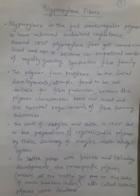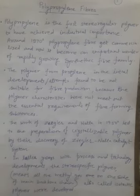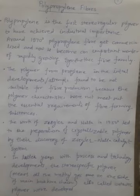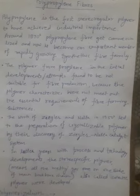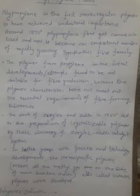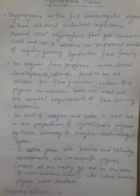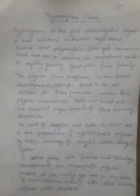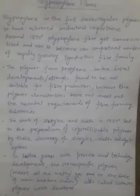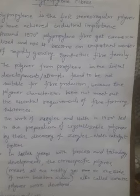Polypropylene is the first stereoregular polymer to have achieved industrial importance. Stereoregular means some side chains may result, and because of that, the close packing of molecules is not easily achieved. In the later years, even after the discovery of this polypropylene polymer around the 1970s, polypropylene fiber got commercialized and now it has become an important member of the rapidly growing synthetic fibers family.